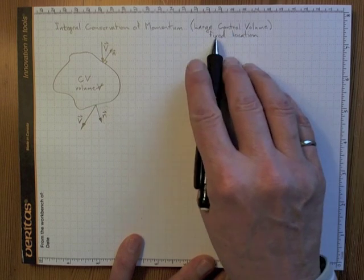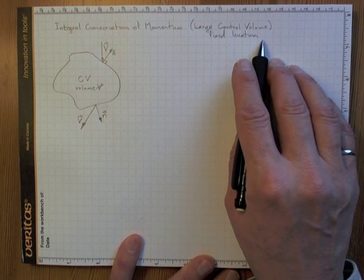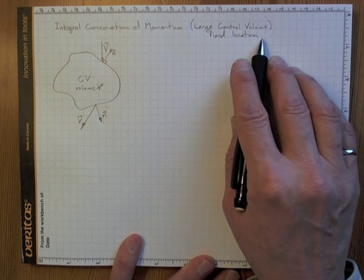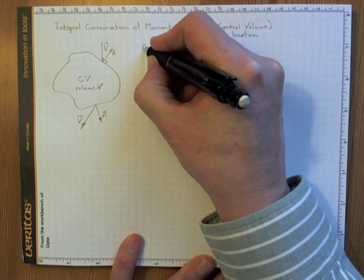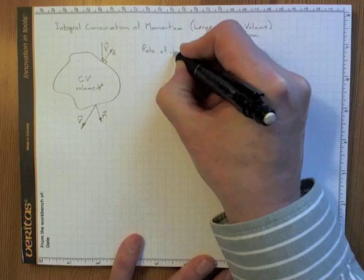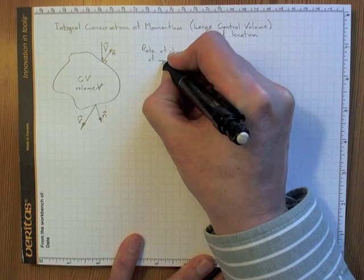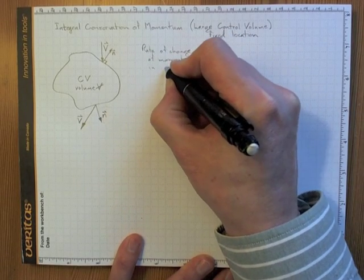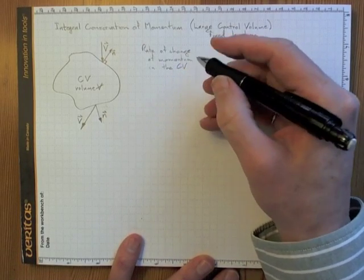The control volume is at a fixed location in space with respect to whichever frame of reference we choose — it could be a moving frame of reference moving at a constant velocity. The rate of change of momentum in the control volume depends on what goes in, what goes out, and the forces applied.